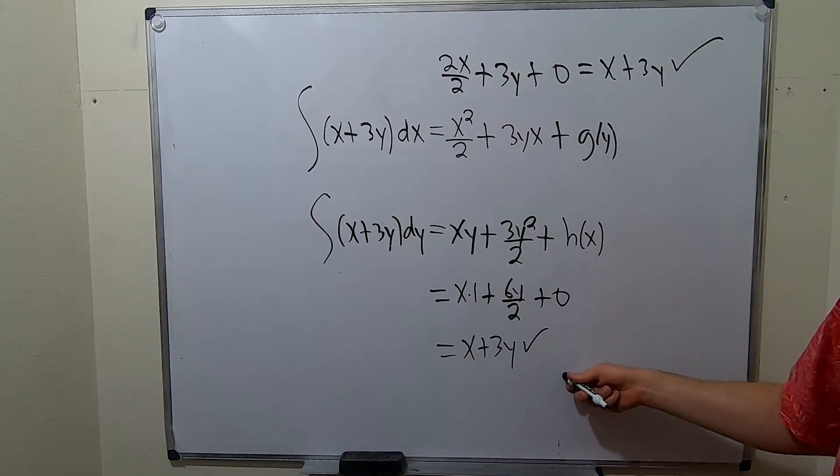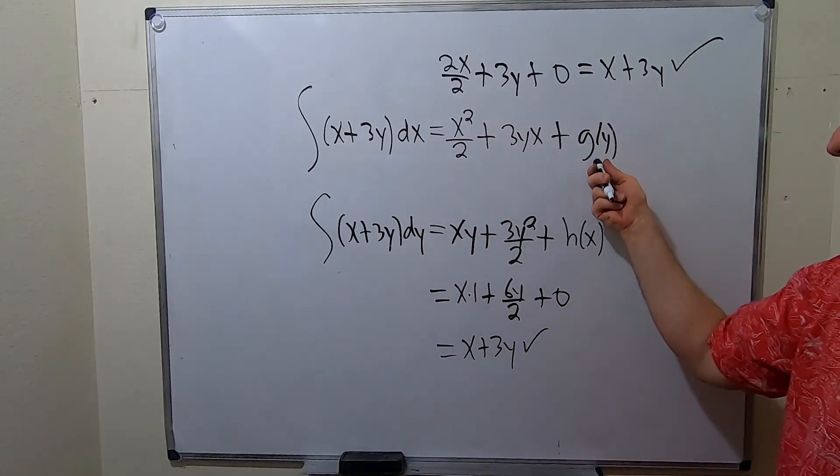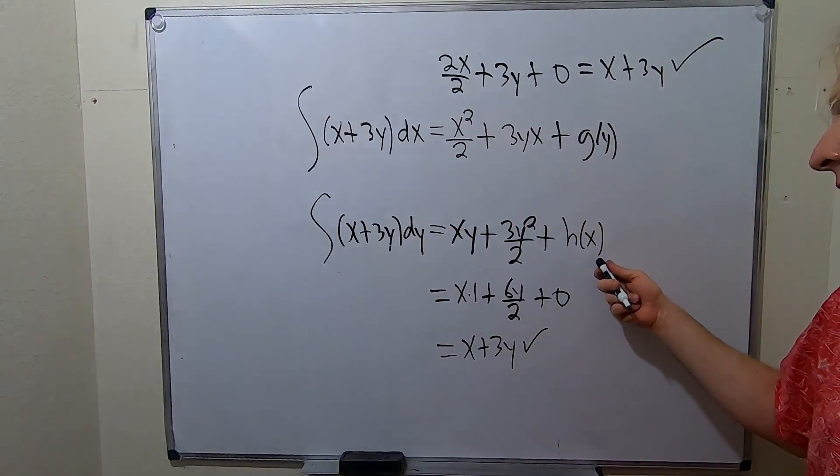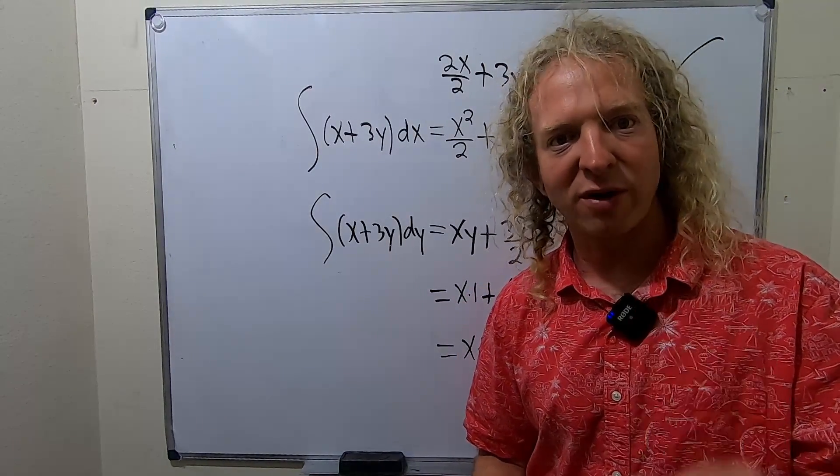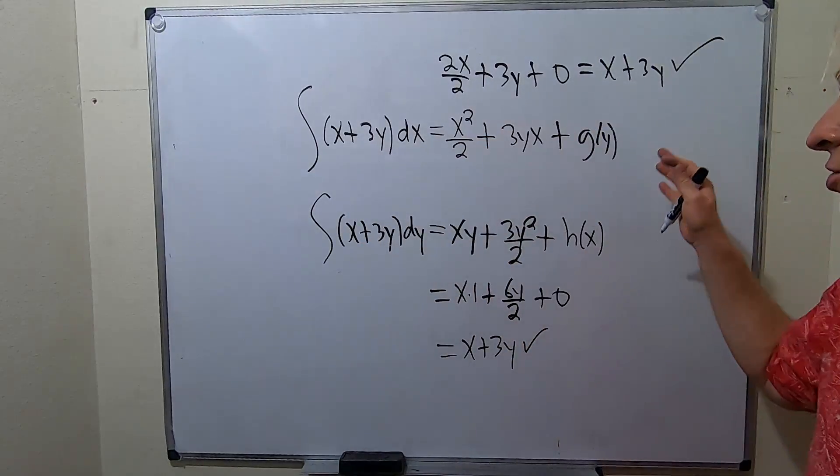And boom, look at that. Works every time. So one more time, when you differentiate with respect to x, you have to add an unknown function of y. Differentiate with respect to y, add an unknown function of x. In general, when you have a multivariable function and you integrate with respect to one variable, and it's indefinite, which is not often the case, you add an unknown function of the other variable.